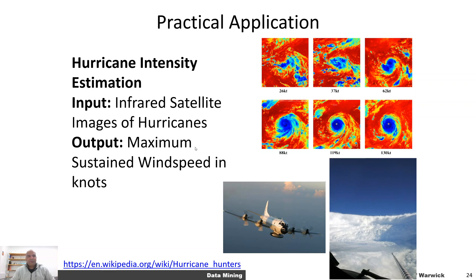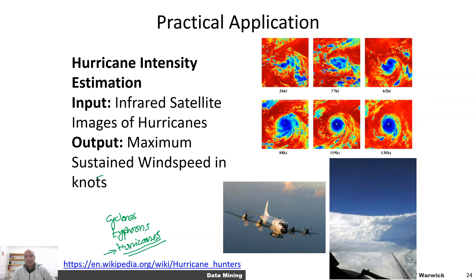Before moving on, let me explain what a hurricane is. Hurricanes are storm systems that go by different names: some people call them cyclones, some call them typhoons, and some call them hurricanes. The reason for these differences depends upon which ocean they occur in. In the Atlantic Ocean we call them hurricanes, in the Pacific Ocean we call them typhoons, and in the Indian Ocean we call them cyclones, but we can typically use the same word for all of them.